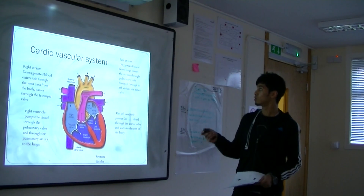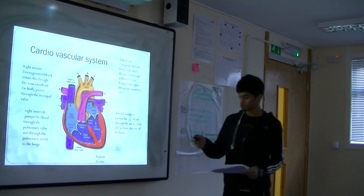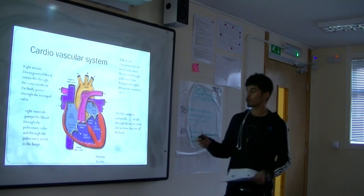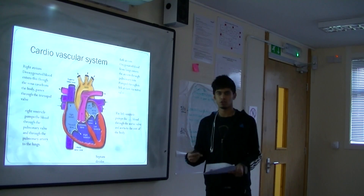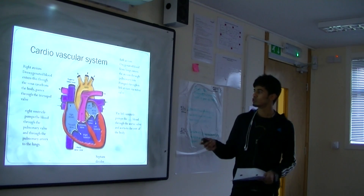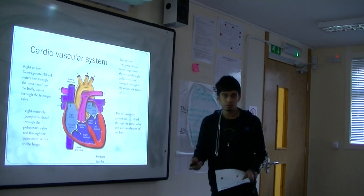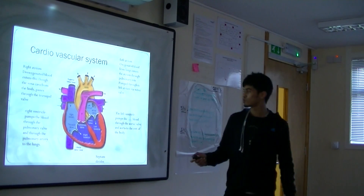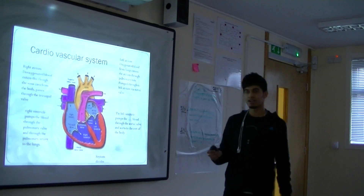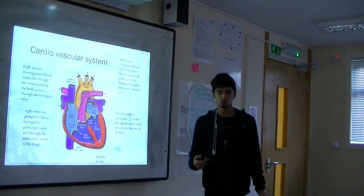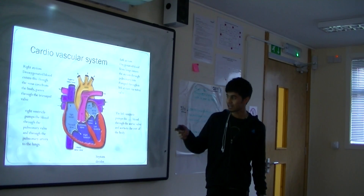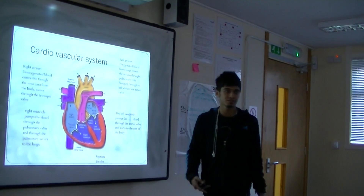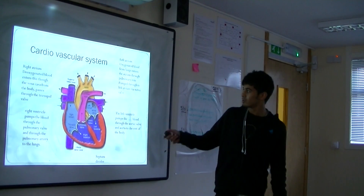Then you go on to the left atrium. The left atrium is the top part, which is located here. It receives oxygenated blood from the lungs, which comes through the pulmonary vein, leading into the mitral valve. The mitral valve leads onto the left ventricle, which pumps the blood through the aortic valve into the muscle and the aorta.